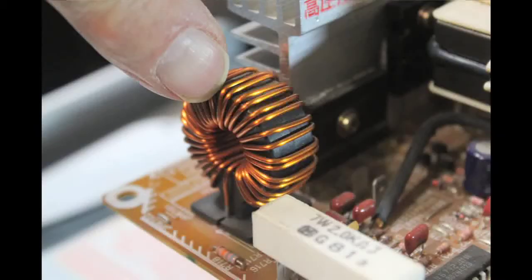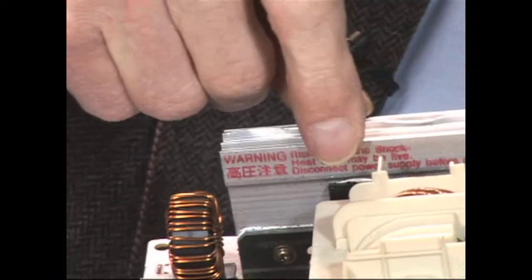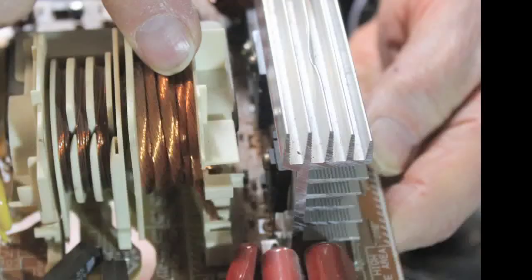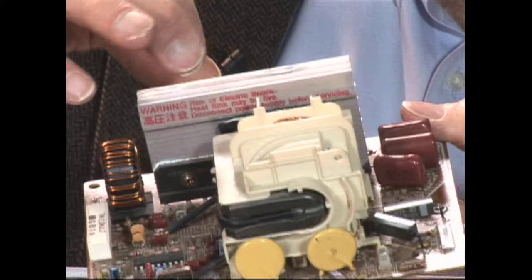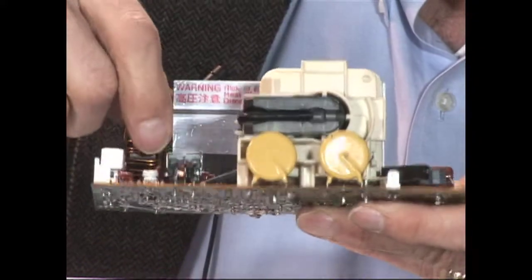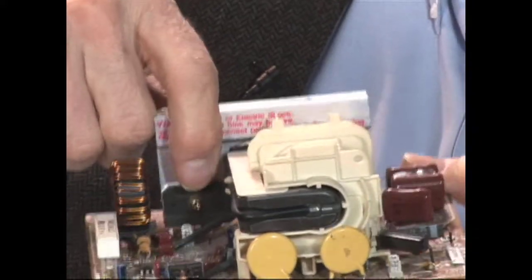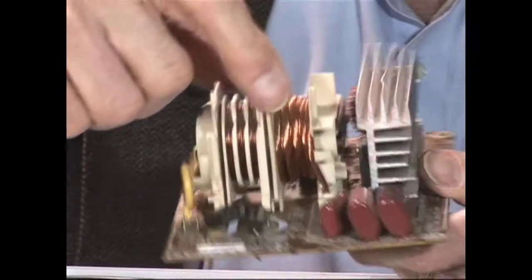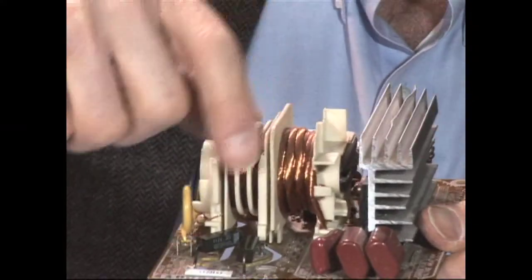Then it goes to two transistors that are back here, which you probably have a little bit of a hard time seeing, but they have to be heat sunk since they do have heat loss themselves. And they chop the DC voltage into 20 kilohertz voltage, which then is fed to this transformer.